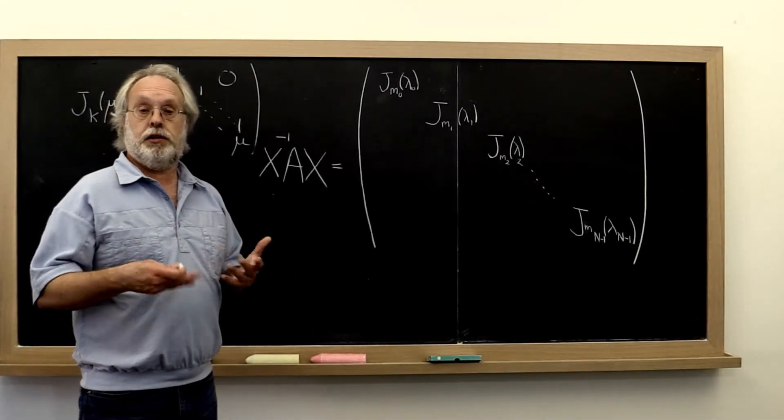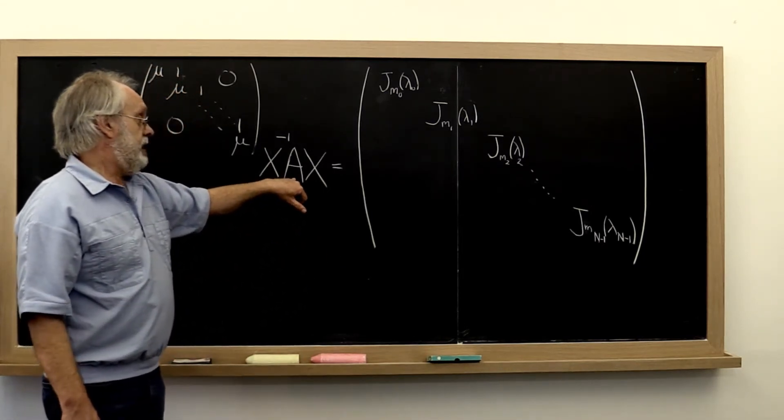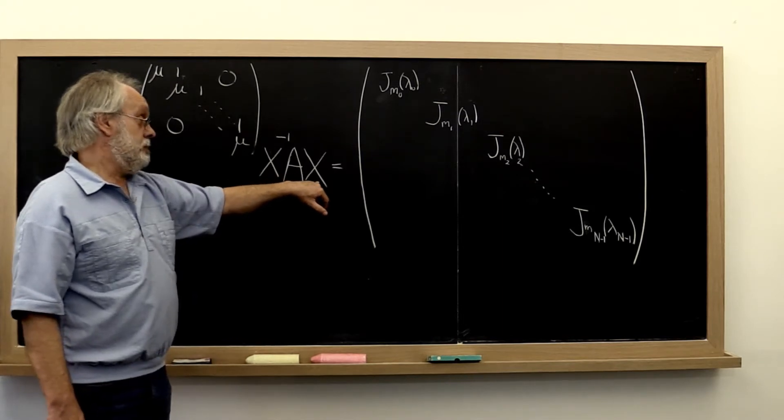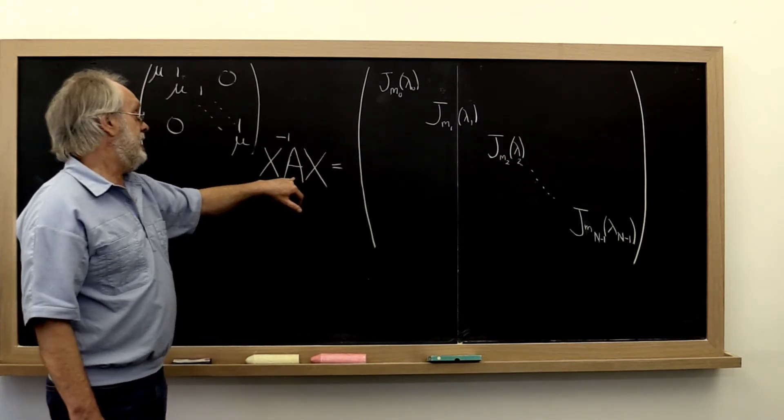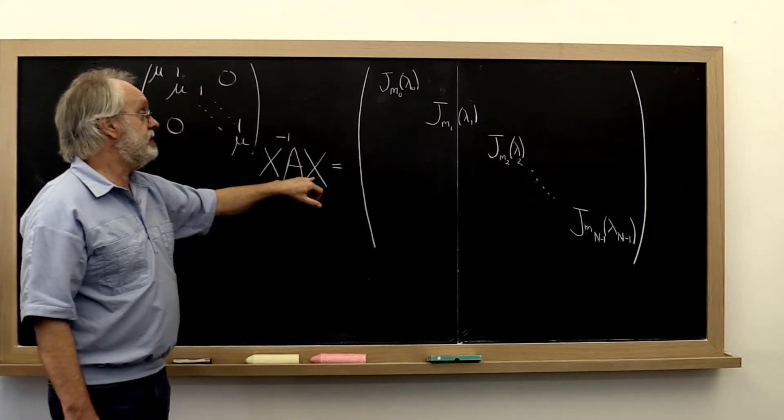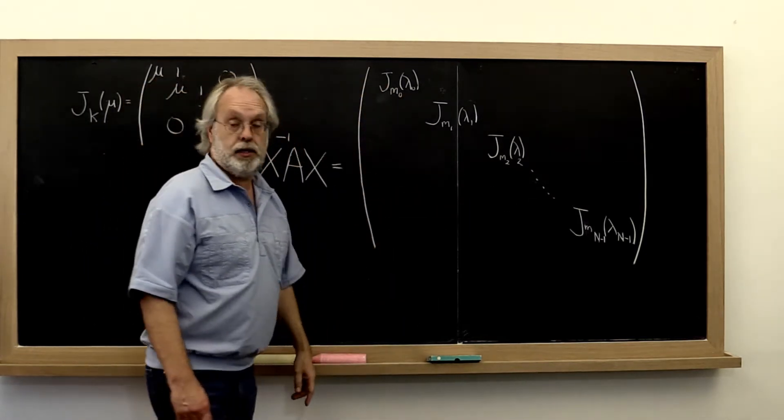A classic result in theoretical linear algebra is that given any matrix A, it may or may not be diagonalizable. But what is the case is that you can find a matrix x such that x inverse A times x equals a matrix that is block diagonal.